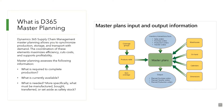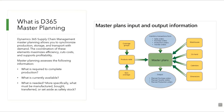Master Planning assesses the following information: what is required to complete production, what is currently available, and what is needed — more specifically, what must be manufactured, bought, transferred or set aside as safety stock. This is what the master planning module covers in a nutshell.